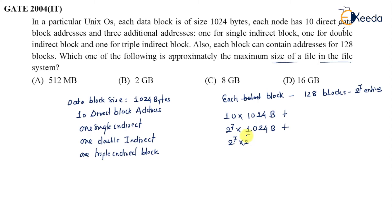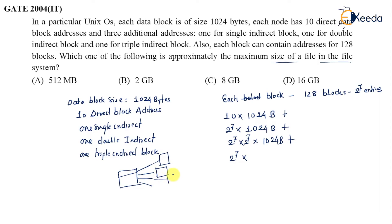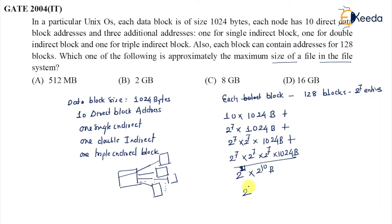For double indirect, there are 2^7 × 2^7 entries, each pointing to 1024 bytes. For triple indirect, it is 2^7 × 2^7 × 2^7 × 1024 bytes. Generally, the smaller terms become irrelevant and the large value dominates, giving us 2^21 × 2^10, which equals 2^31 bytes.